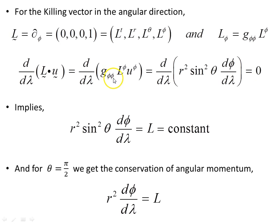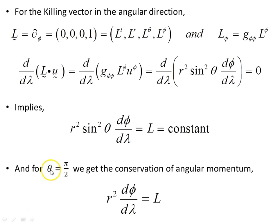We got g_φφ, which gives us this object, and the tangent vector dφ/dλ, and the L component. Anti-differentiating, we get r² sin²θ · dφ/dλ equals some constant L. Setting θ = π/2, so we're in the familiar xy-plane, we get the total angular momentum equal to a constant — conservation of angular momentum from the Killing vector.